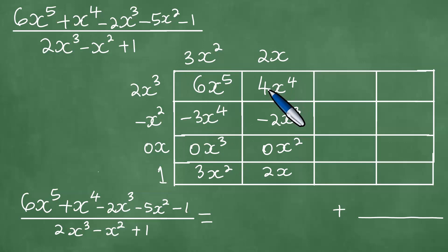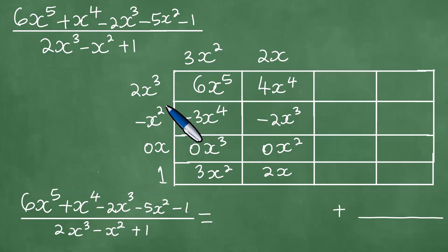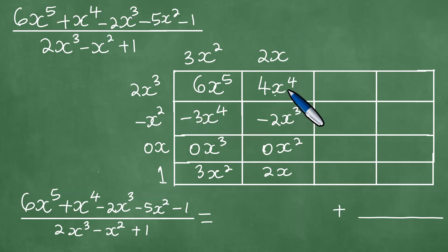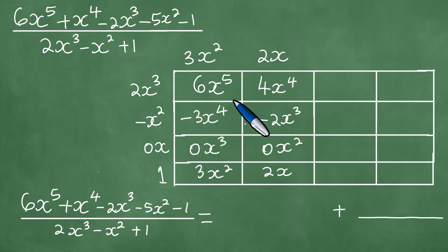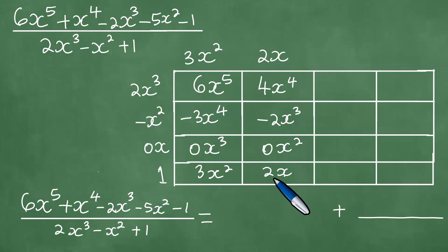After that, we continue the multiplication for the 2x column. 2x cubed times 2x gives 4x to the fourth power. Minus x squared times 2x is minus 2x cubed. 0x times 2x: 0 times 2 is 0, and x times x is x squared, so it's 0x squared. And 1 times 2x is 2x.